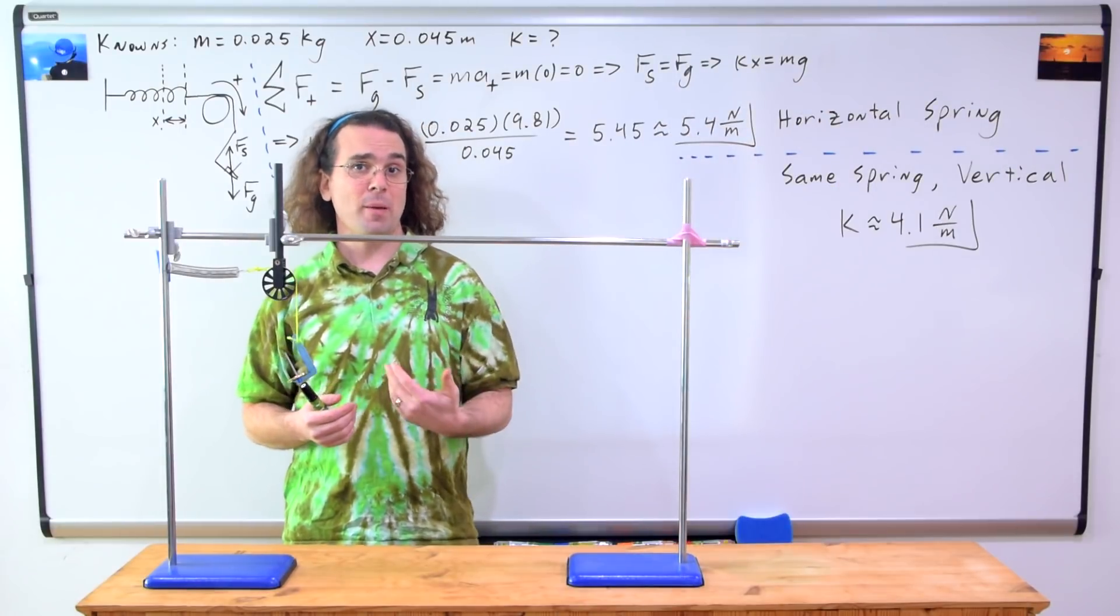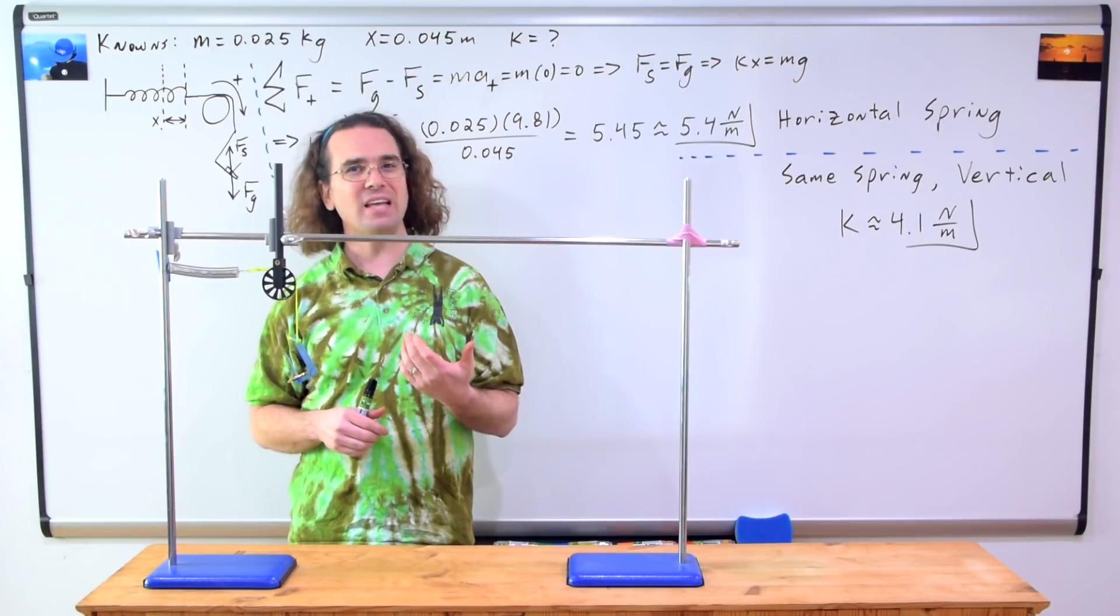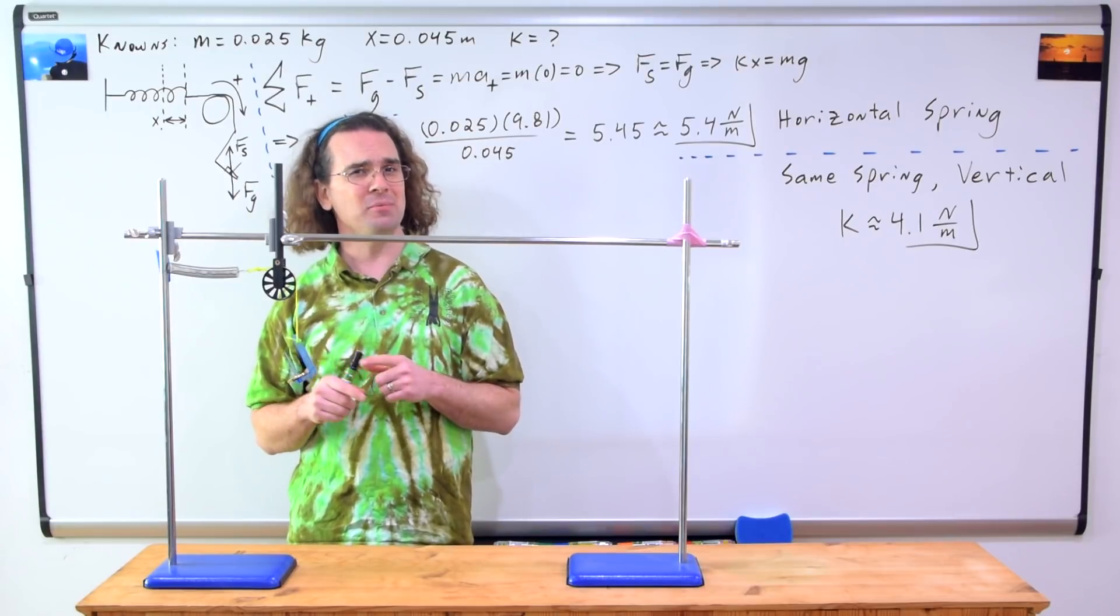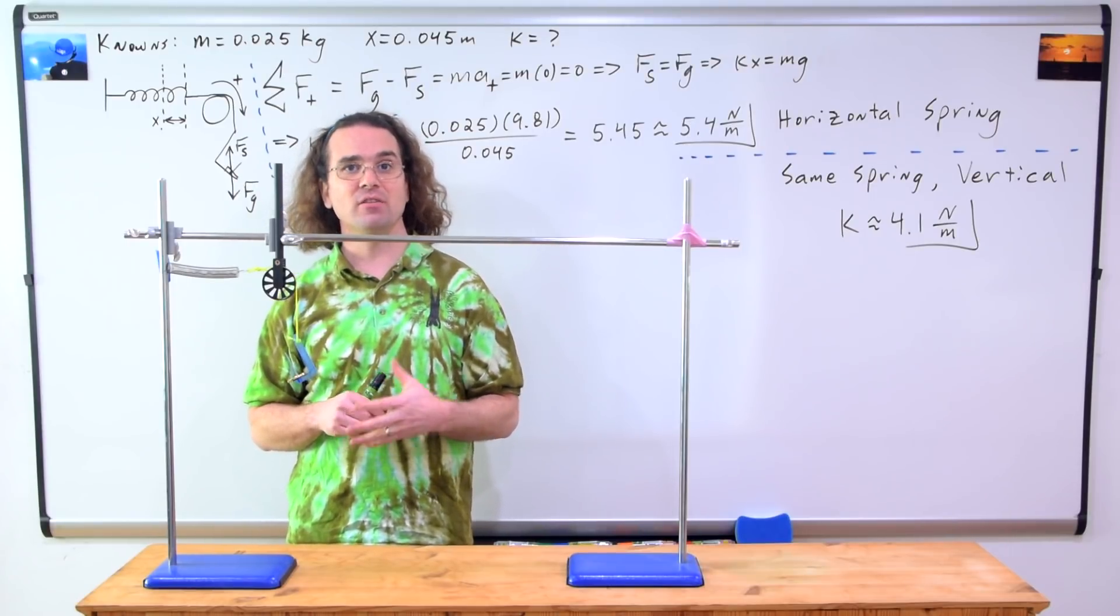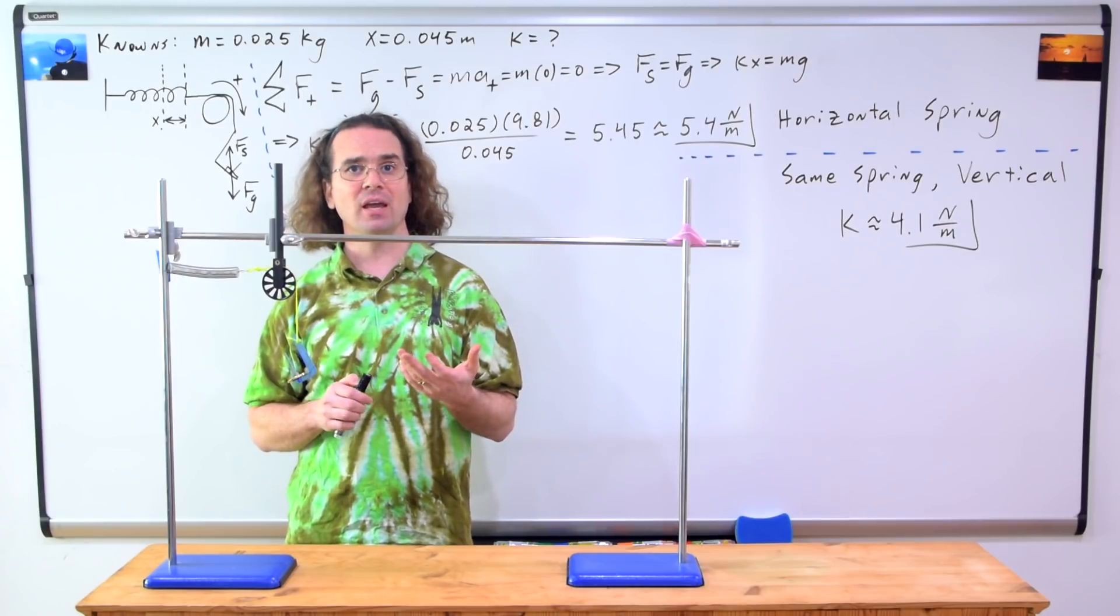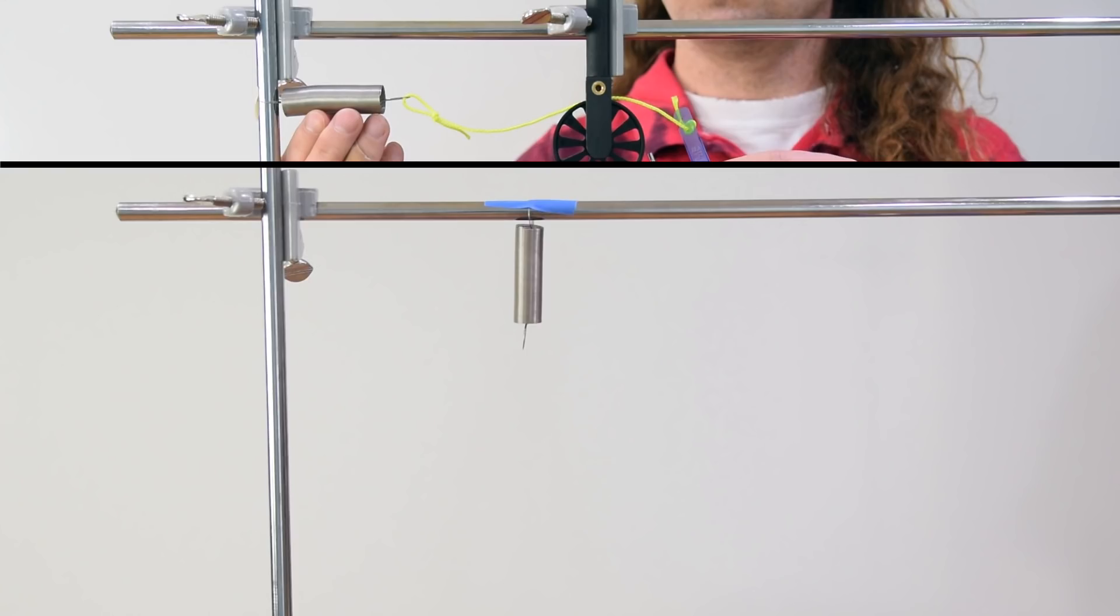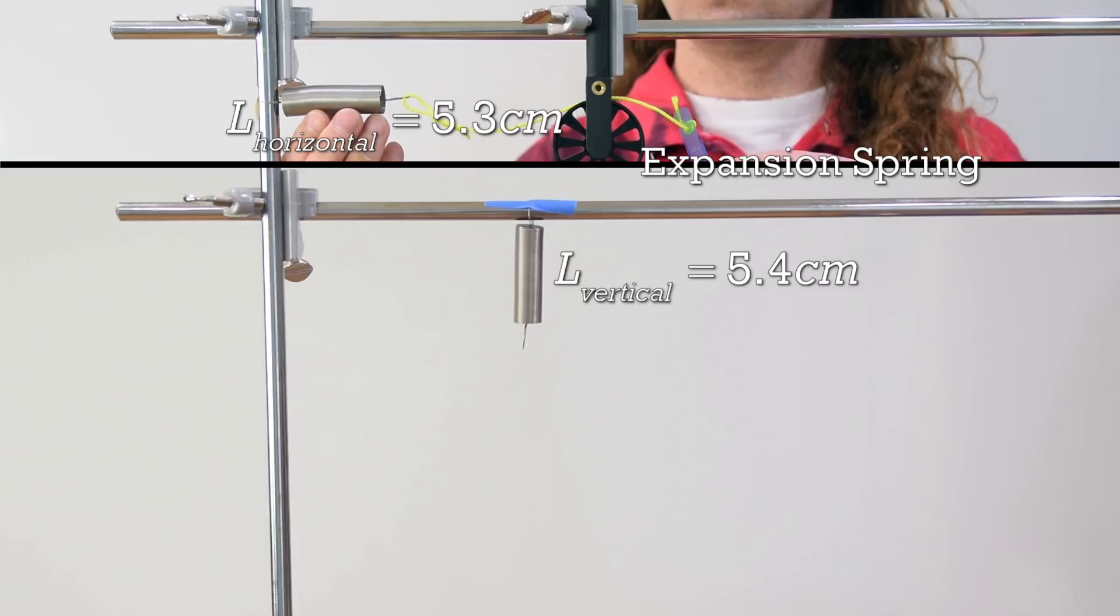The reason for the discrepancy between the two calculated spring constants was actually just alluded to by Bobby. The force of gravity acting on the center of mass of the vertically hanging spring actually makes the spring longer. This particular spring is called an expansion spring. It is designed to be expanded. When it is horizontal, it has a length of 5.3 centimeters. However, when it hangs vertically, even without any mass hanging on it, the force of gravity acting on the expansion spring's center of mass, along with the corresponding force of tension holding the spring up, expands the spring to 5.4 centimeters.